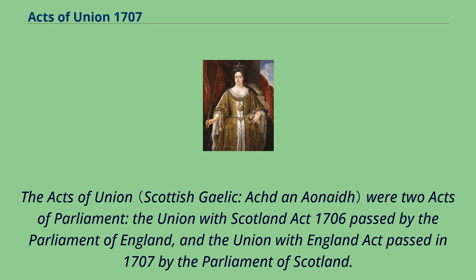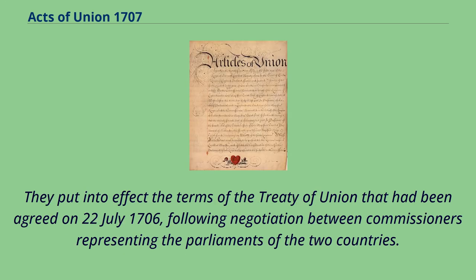Two Acts of Parliament — the Union with Scotland Act 1706, passed by the Parliament of England, and the Union with England Act passed in 1707 by the Parliament of Scotland — put into effect the terms of the Treaty of Union that had been agreed on July 22, 1706, following negotiation between commissioners representing the parliaments of the two countries.